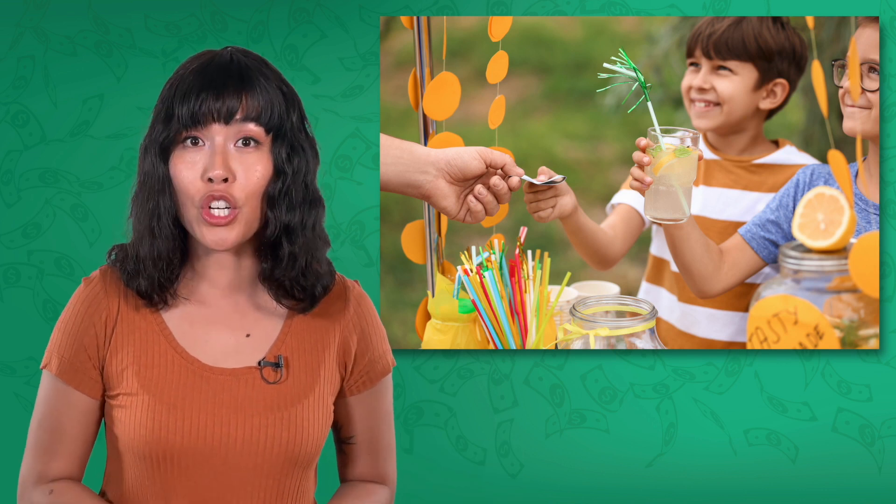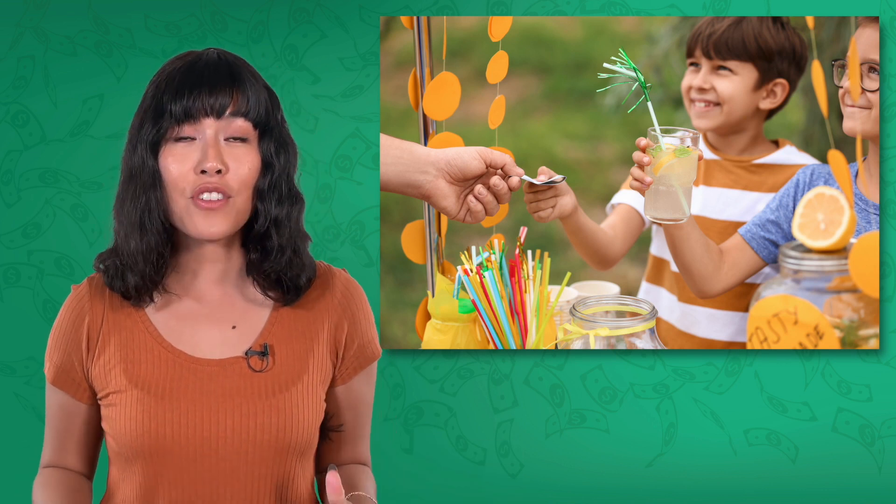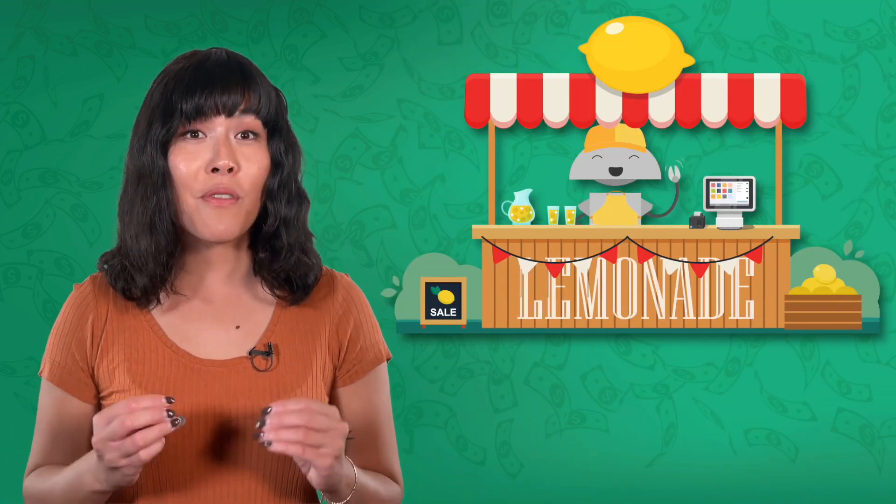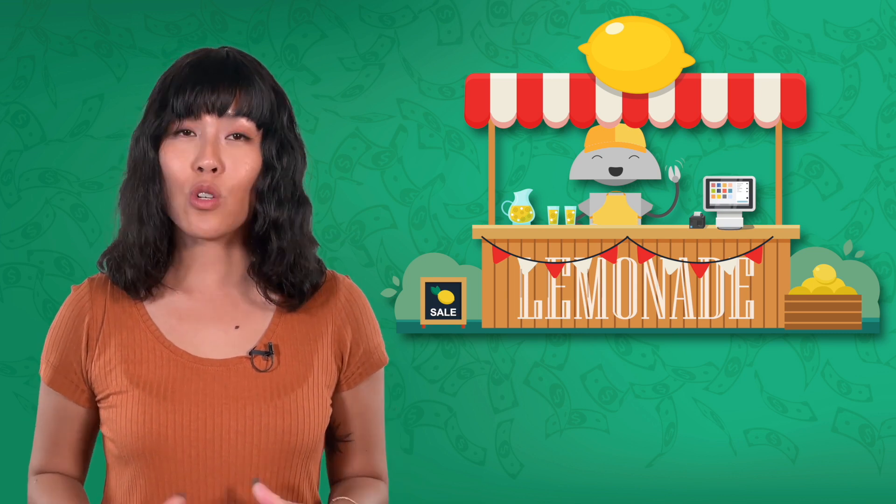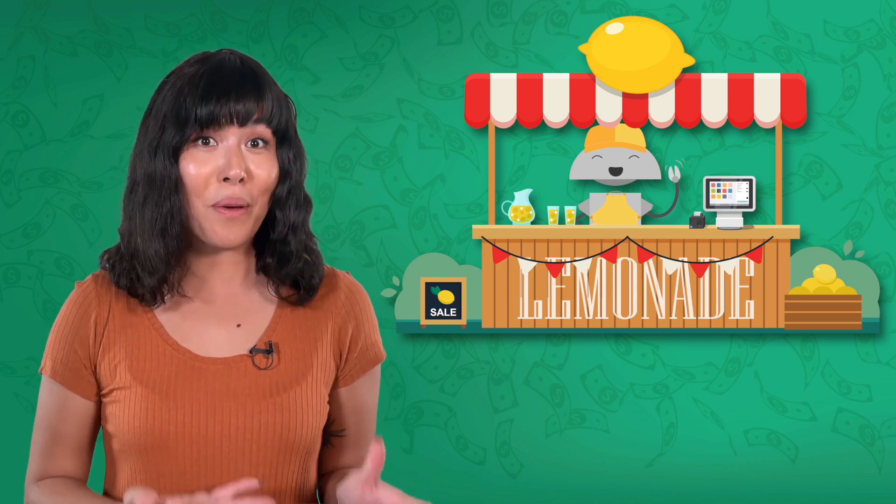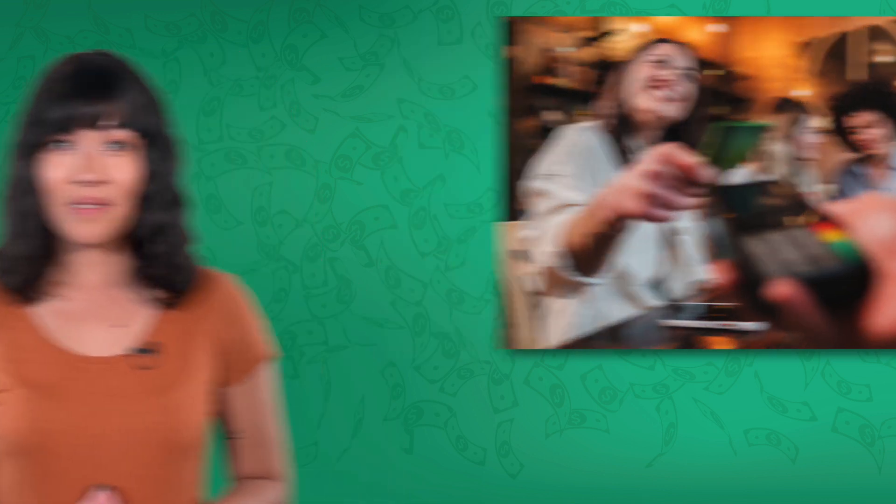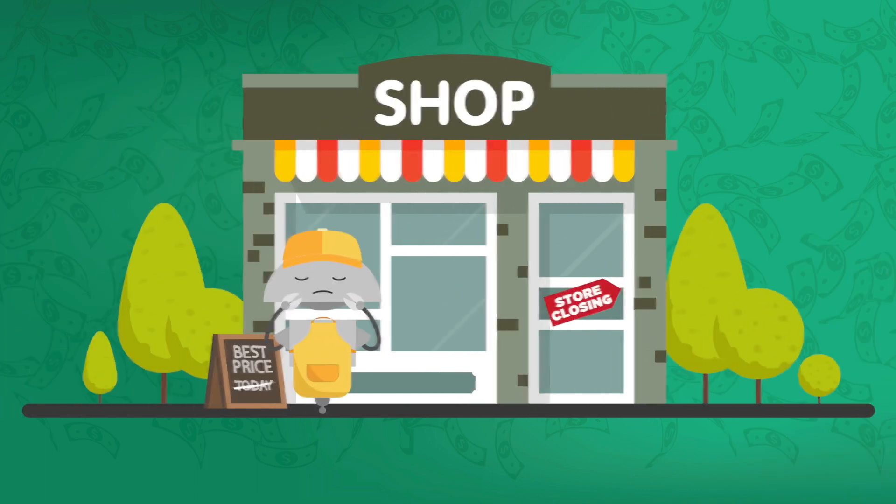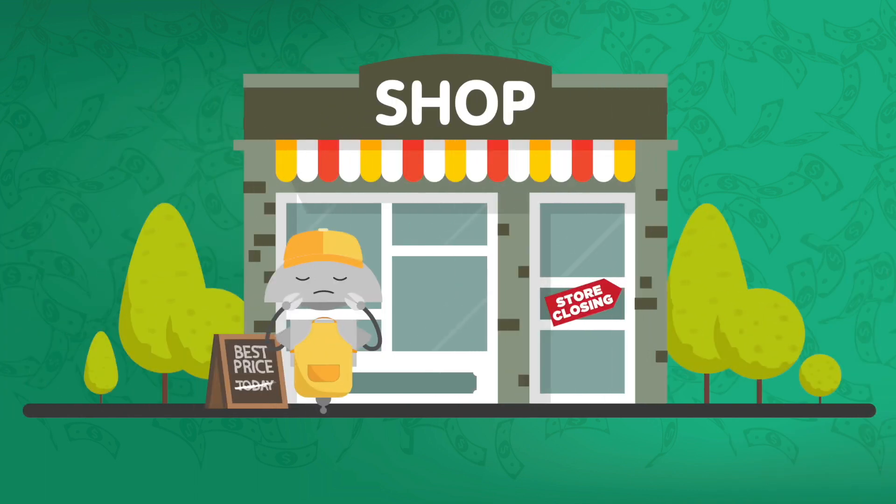Consumers have a demand for goods and services like fresh and delicious lemonade. Entrepreneurs take the risk to start businesses to provide those goods and services in order to make a profit, like when you started your lemonade stand. Consumers purchase goods and services from businesses that provide the best product at the most reasonable price. Producers thrive when they are best able to meet the needs of consumers. Businesses that have difficulty meeting those needs or charge too much for their products have to make adjustments in order to avoid going out of business.